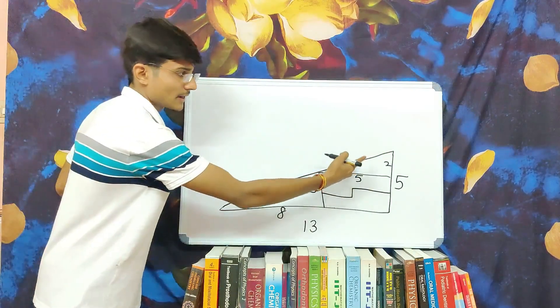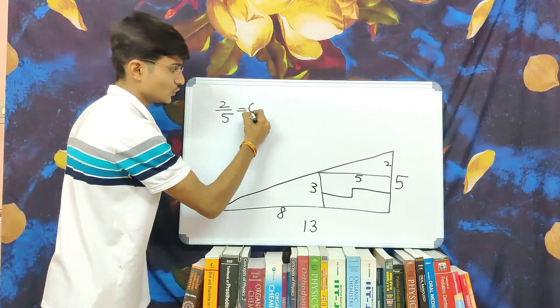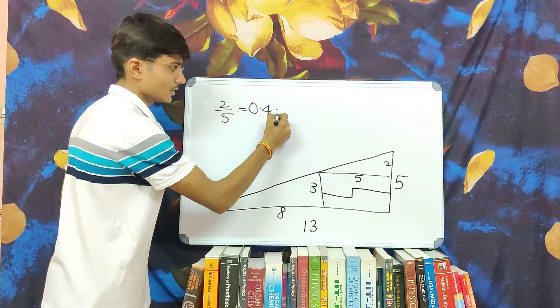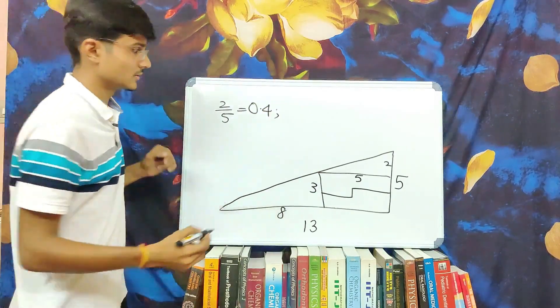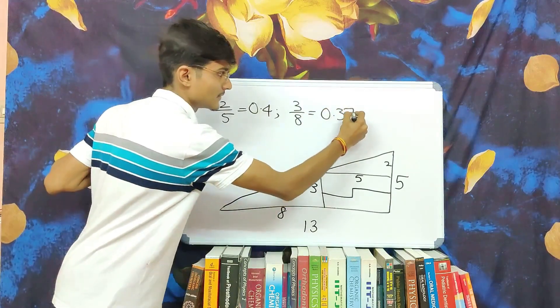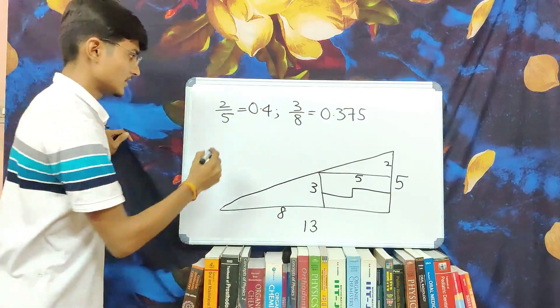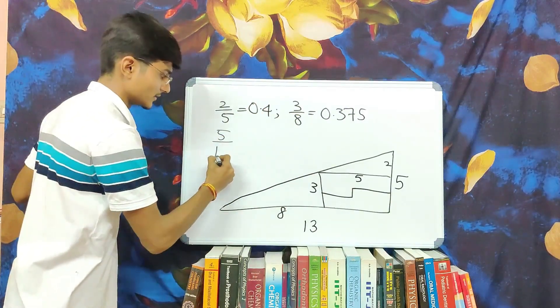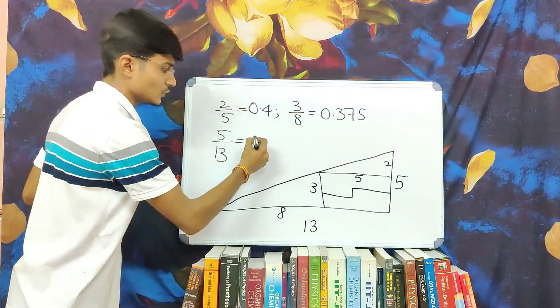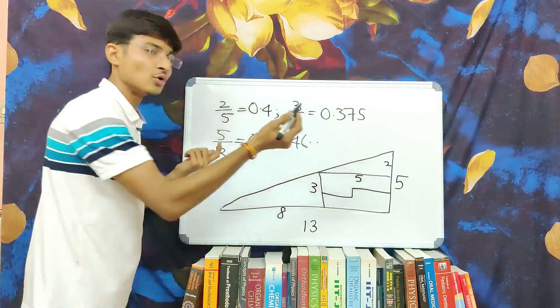The slope of the smaller triangle is 2 by 5 which is equal to 0.4 while the slope of this triangle is 3 by 8 which is equal to 0.375. And slope of the large triangle is 5 by 13 which is equal to 0.3846 and so on.